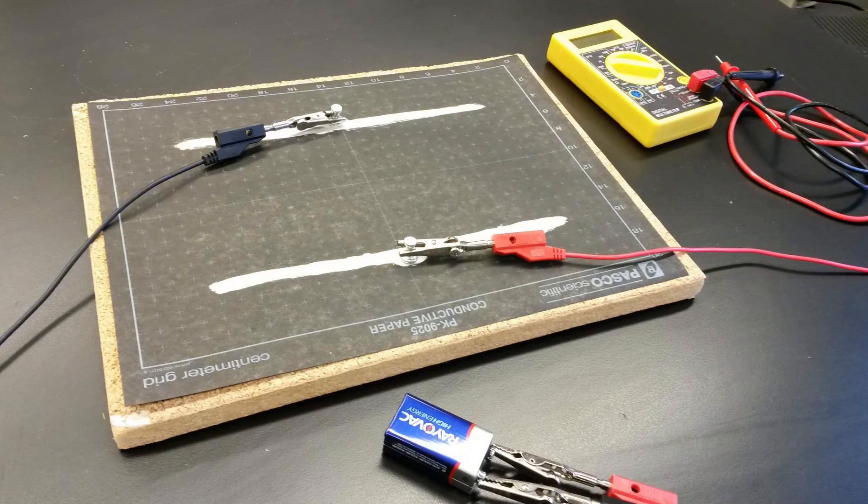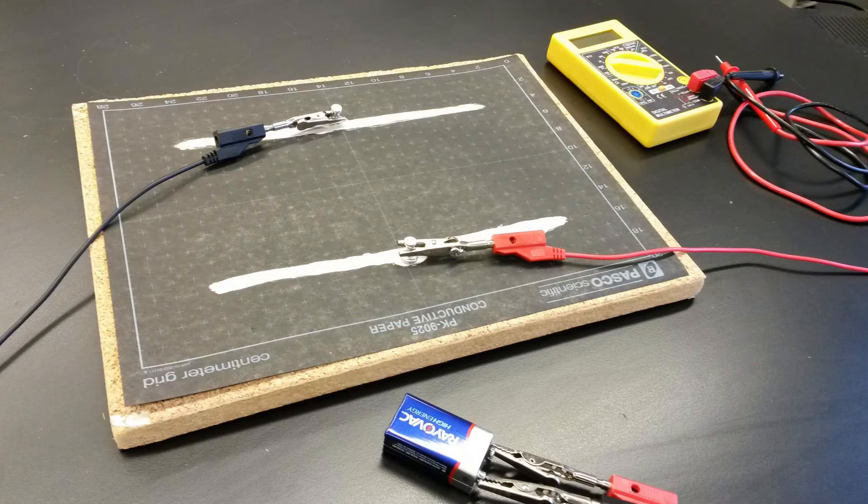To find the equipotential lines in your conductive paper, first connect the 9-volt battery to each side of your conductive pattern. Set the multimeter to measure voltage. Place one of the probes on one side of the conductive pattern and leave it there.